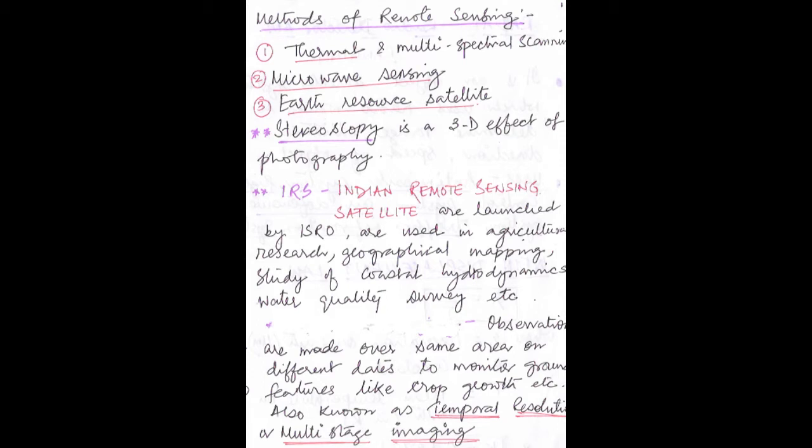Next I will discuss about temporal resolution or multistage imaging. This is very important. The observations are made over the same area on different dates to monitor ground features like crop growth etc. For a same area, we first choose a particular area, then we do the observation on different dates, repeating on the same area to monitor ground features like crop growth and other areas of interest.